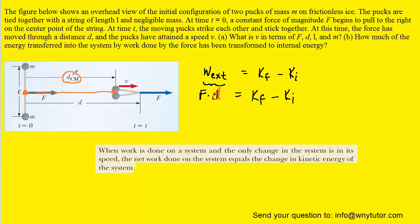Our goal is to find that displacement. We know that the length of the string is indicated by the letter L. If we look carefully at the way the string is pinched by the force, we can see that this distance here would not be L but would be half of L, because this represents half of the rope. So that distance can be marked as L divided by 2.